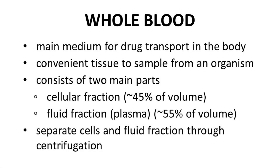Whole blood is the main carrier of a drug that is transported through the body. Fortunately, blood is also very easy to sample from organisms, so one can sample a patient's blood, measure the amount of drug present, and learn how much drug is in a patient. There are two main parts to whole blood: the cellular fraction — red blood cells, white blood cells, and platelets — which is about 45% of the volume of whole blood, and the liquid fraction, called plasma, which makes up roughly 55% of the volume of whole blood.